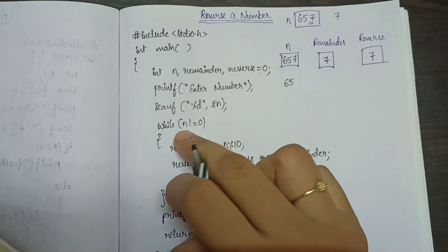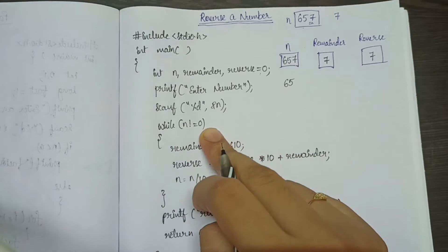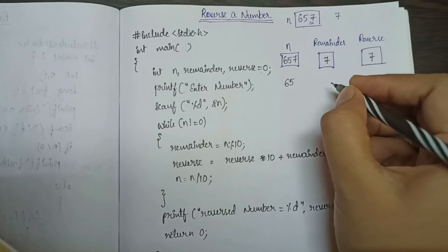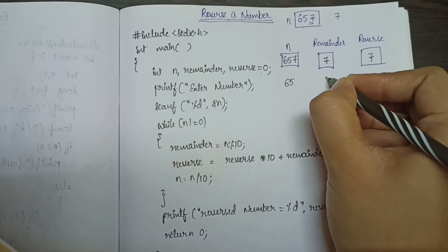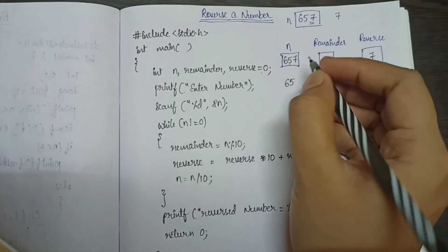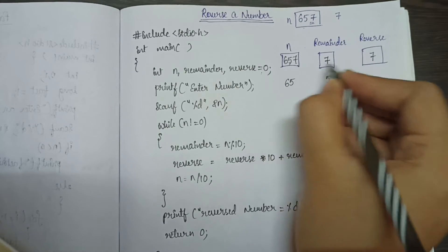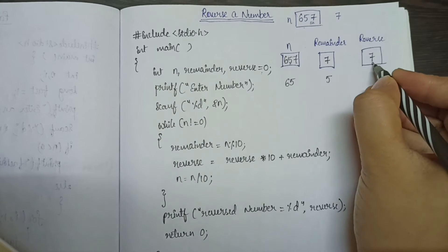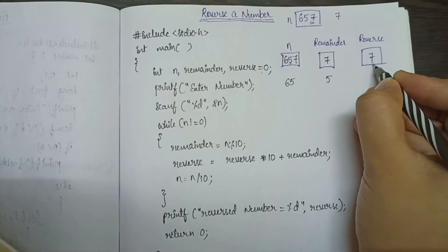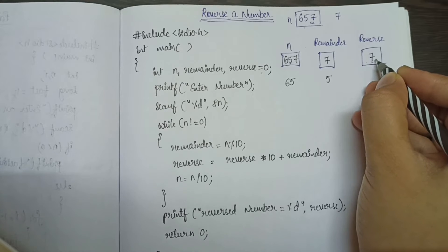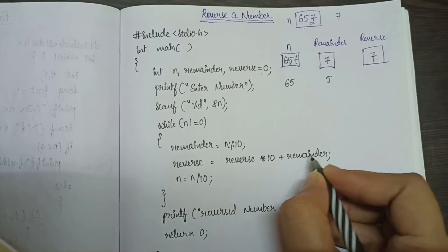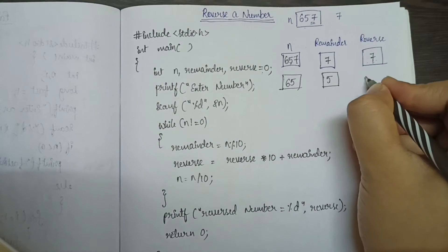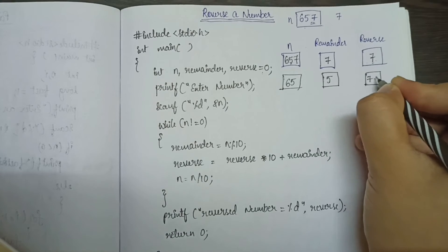Since 65 is not equal to 0, the loop continues. Reminder is equal to 65 modulus 10, which gives the middle digit 5. I have already stored 7 in reverse and now I need to move it to the 10th place. Reverse is equal to reverse into 10 plus reminder, which is 70 plus 5, giving reverse equals 75.